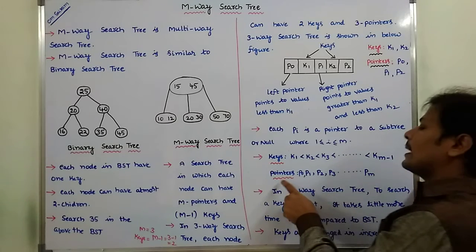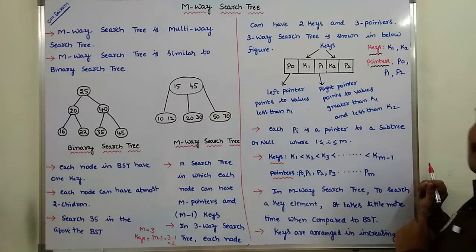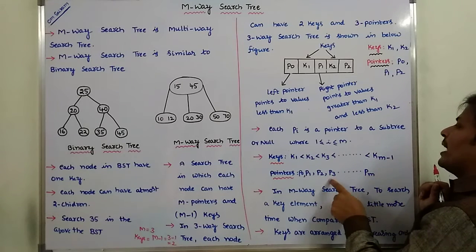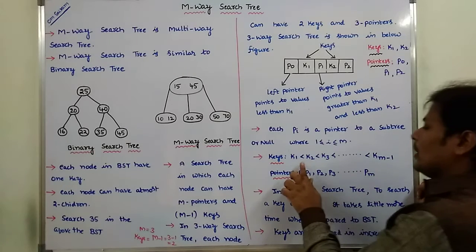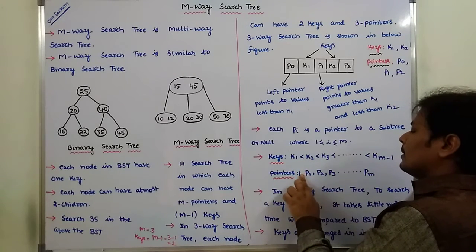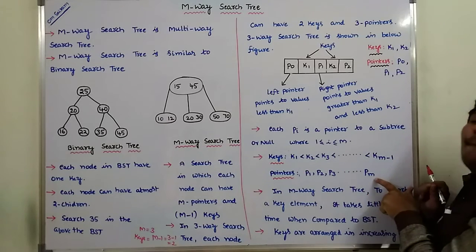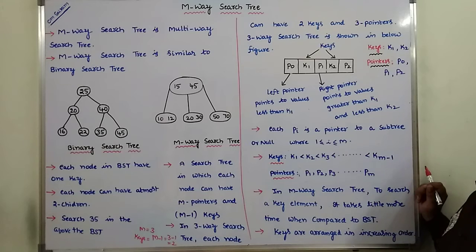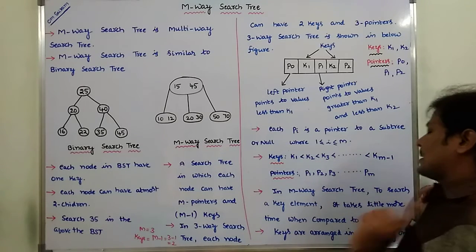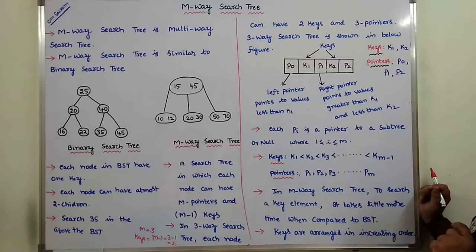The pointers: there are M pointers, that is P0, P1, P2, P3 up to PM. In the multi-way search tree, to search a key element, it takes a little more time when compared to the binary search tree.